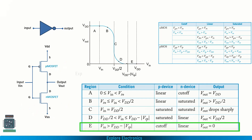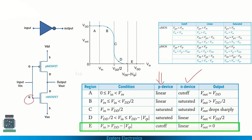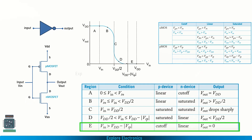Looking at the P and N device states together: the N device starts in cutoff, then moves to saturation in regions B and C, then to linear in regions D and E. The P transistor is in linear in the first two regions, saturation in the middle, and cutoff at the end. If you are not sure about the P device regions, just analyze the N device by comparing its gate and drain voltages — then write the P device states in reverse: linear, linear, saturation, saturation, cutoff.